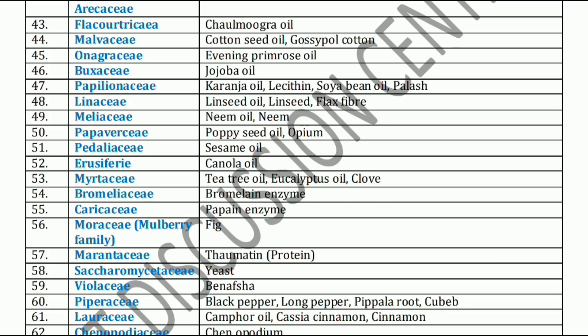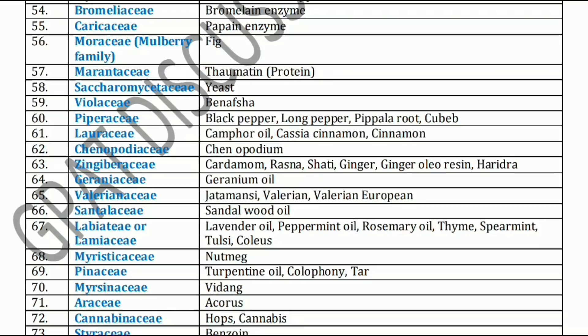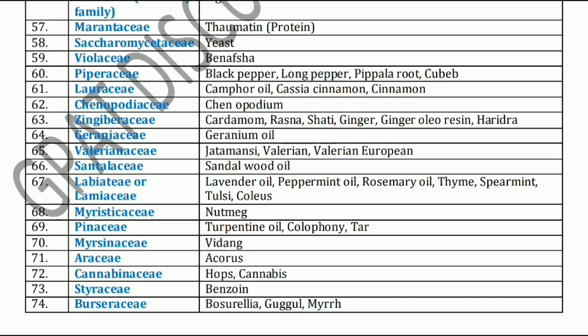Next family is Moraceae family. Moraceae family has Fig. Next family is Marantaceae family. Marantaceae family includes Thaumatin, a protein. Next, Saccharomycetaceae family. Saccharomycetaceae family includes yeast. Next, Violaceae family. Violaceae family has Banafsha.